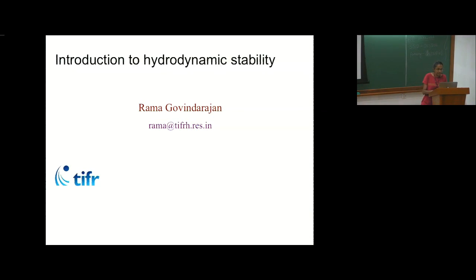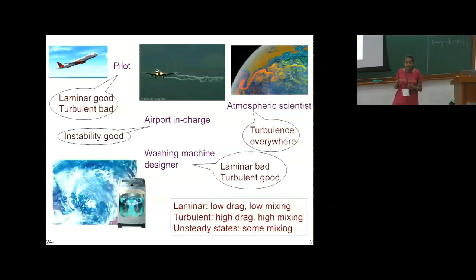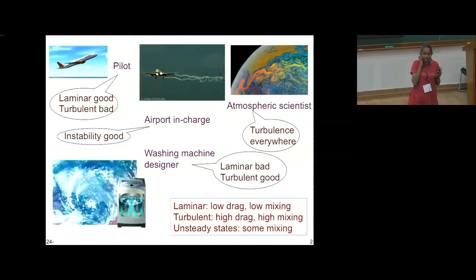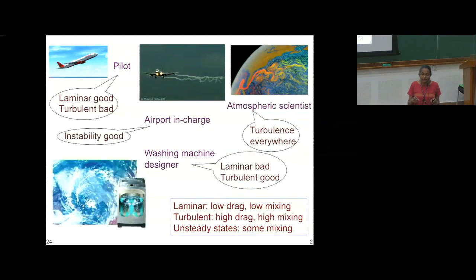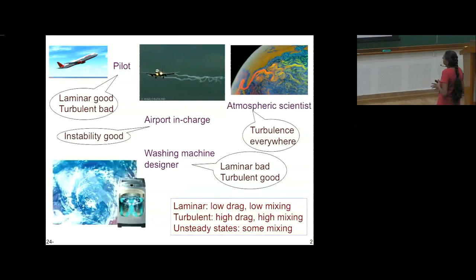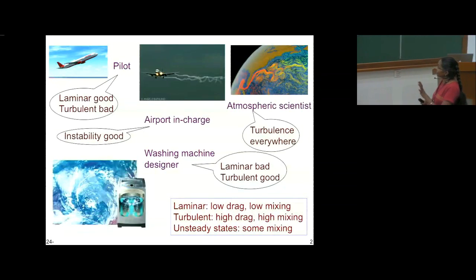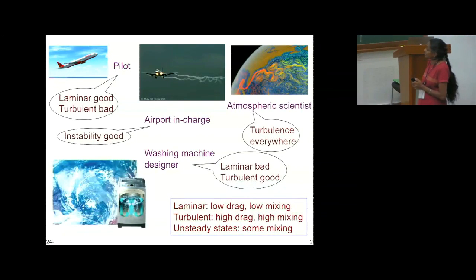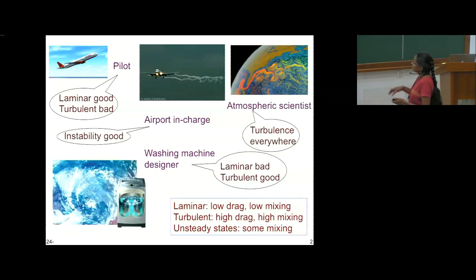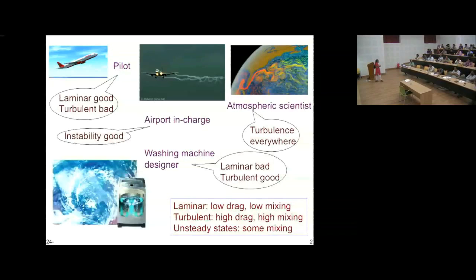I'll keep it fairly general today and we can go to some specific derivations on Friday. The basic idea of stability for a fluid mechanician is built into this thought about whether you want laminar flow or turbulent flow and how you go from one to the other. Typically, laminar flows go through a series of instabilities and then go towards turbulence. Turbulence also can become unstable and go to laminar. We are going to talk mainly about how a laminar flow goes unstable. Many industrial people as well as atmospheric and earth scientists are very interested in this problem of instabilities.